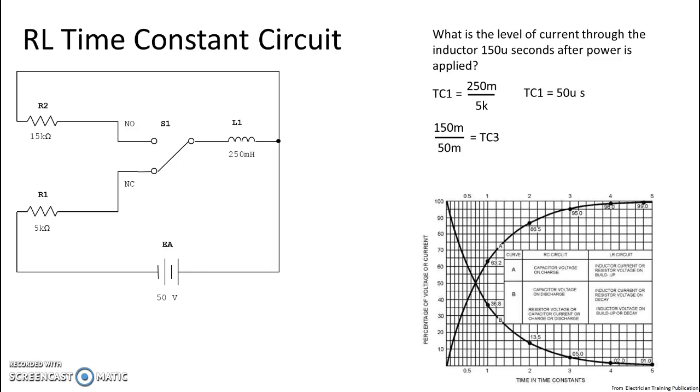And we find that we are at time constant three. Well, time constant three on our energizing path puts us at 95%, but remember we're looking at a level of current. What is the level of current?